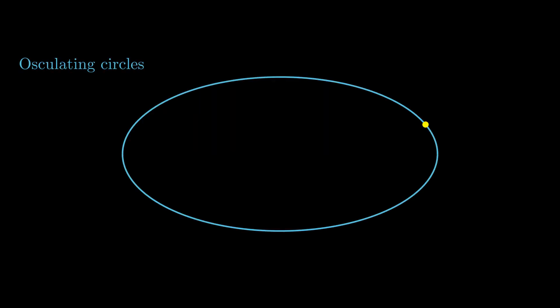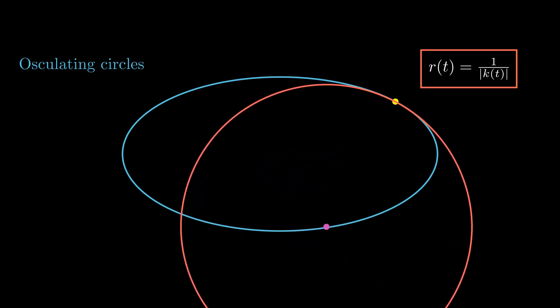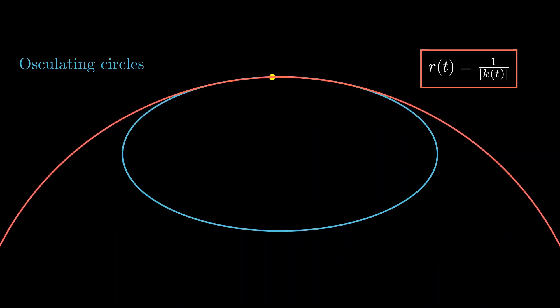For each smooth regular plane curve gamma, at each point gamma of t, we can construct the tangent line passing through gamma of t and having direction gamma prime of t. We could go further and construct the circle co-orientedly tangent to gamma at gamma of t and having the same signed curvature as gamma at this point.